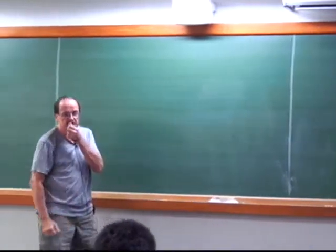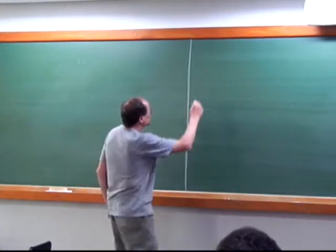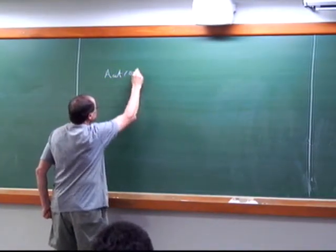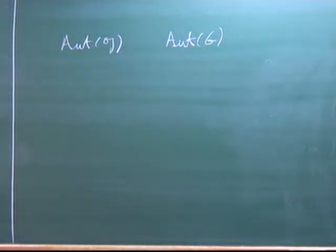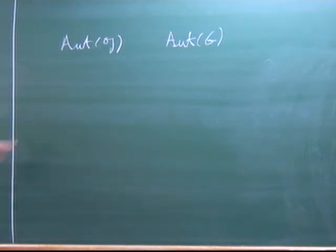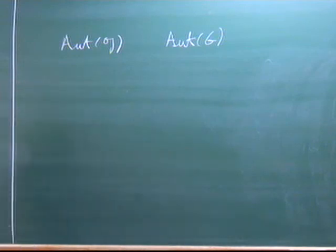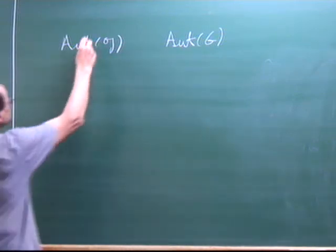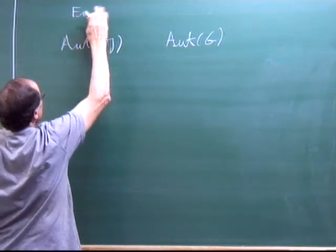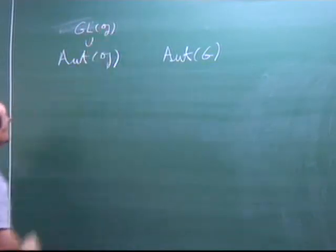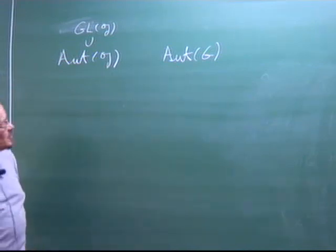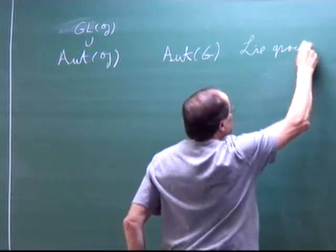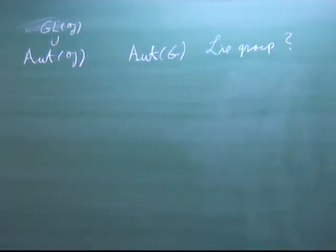Any other questions? So let me recall a little bit about what we did regarding automorphisms. We had automorphisms of the Lie algebra. I can also define automorphisms of the group — a Lie group isomorphism of groups gives a Lie algebra isomorphism of the Lie algebra. So both of these are groups I can define. The automorphisms of the Lie algebra sit inside GL(G). This is clearly a Lie group because it's closed inside there. It's not so obvious that the automorphism group of G is a Lie group.